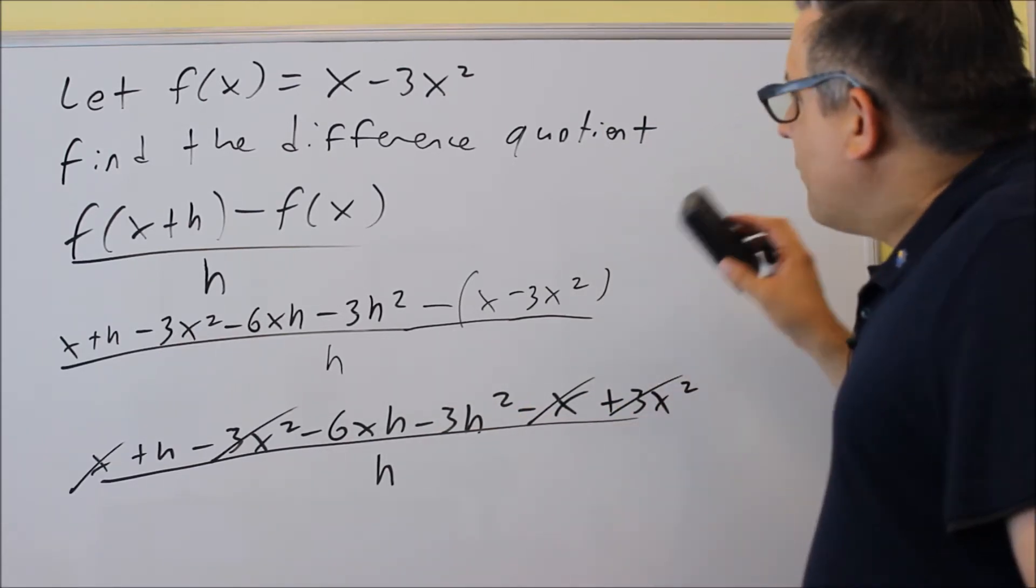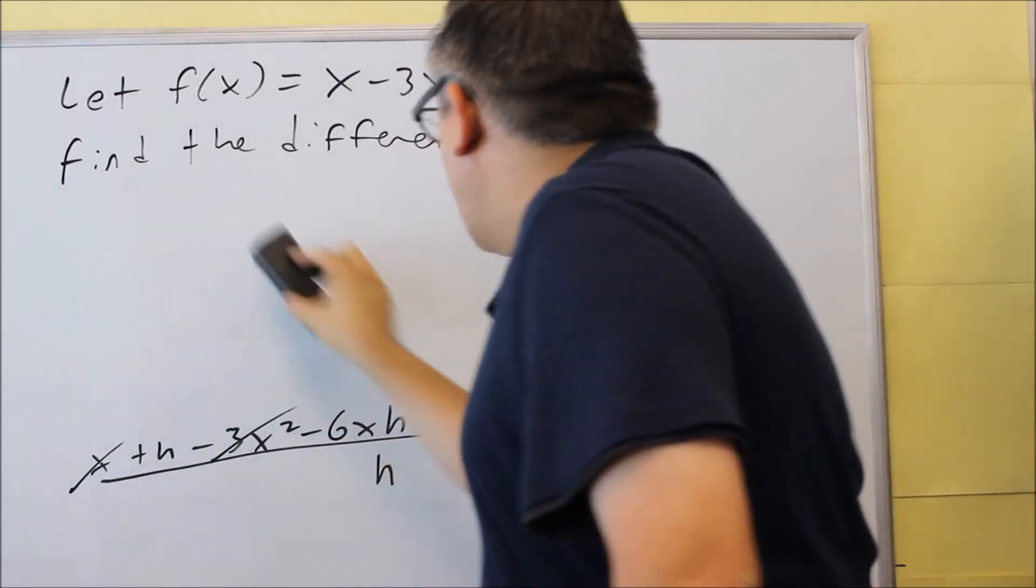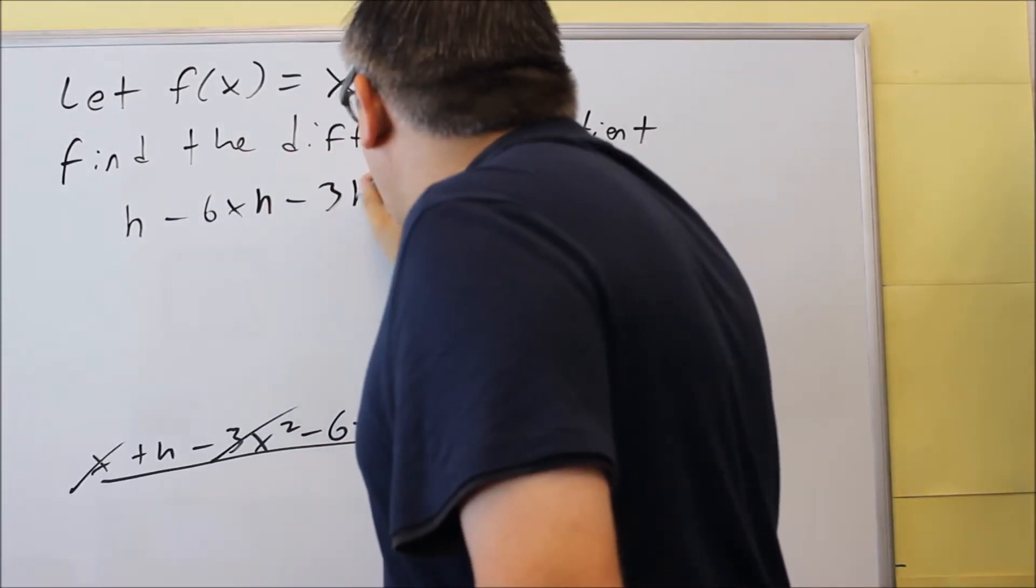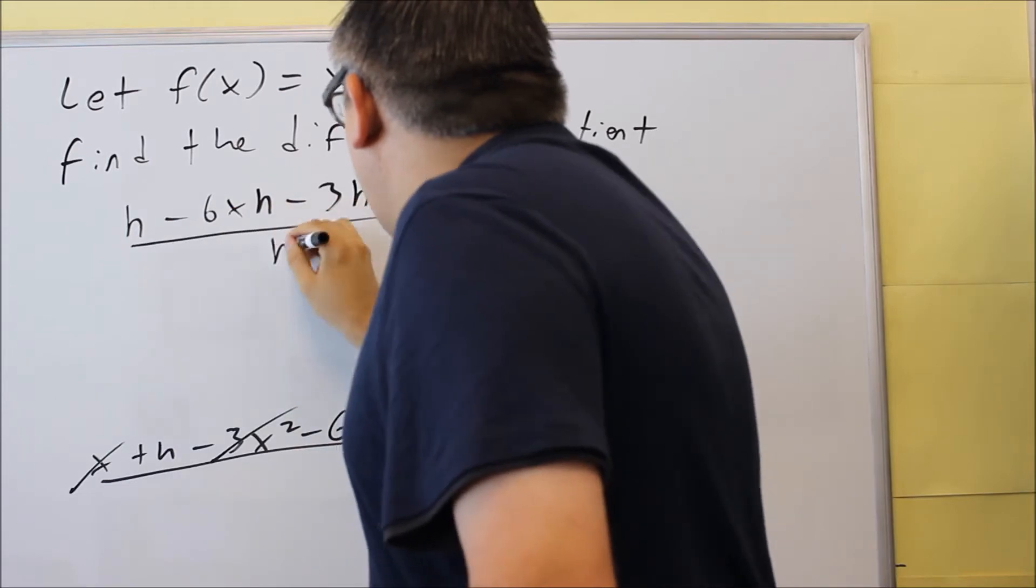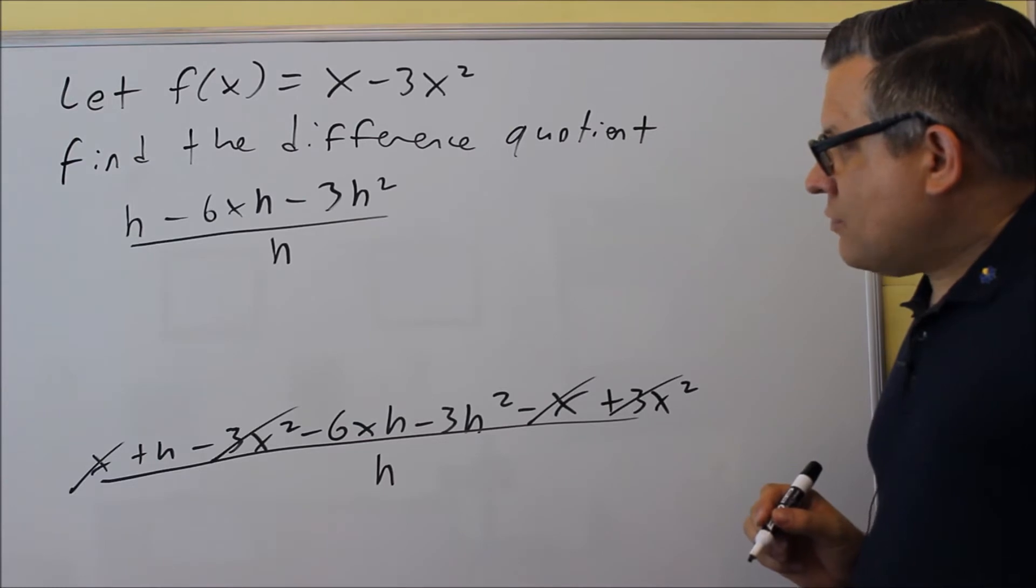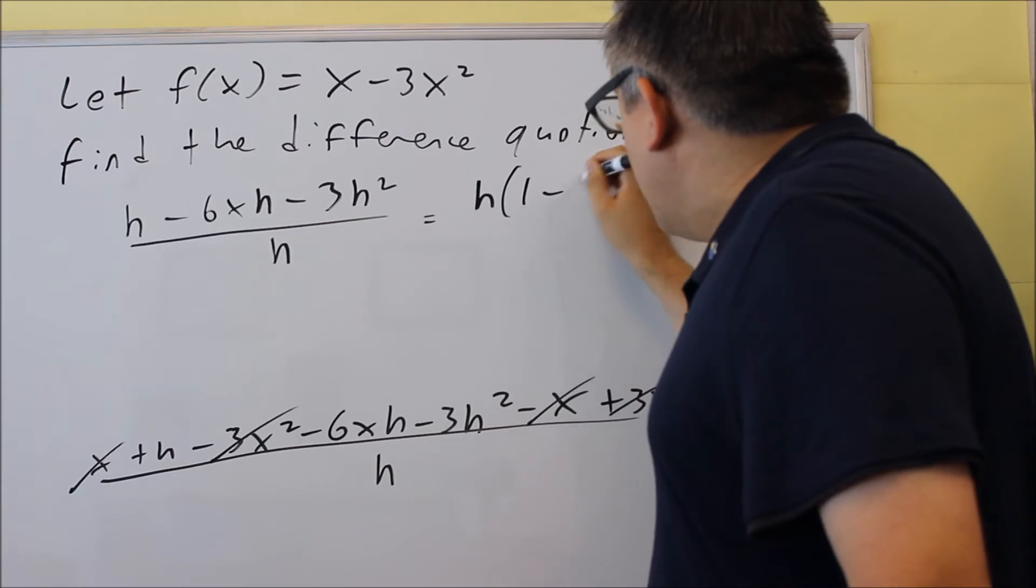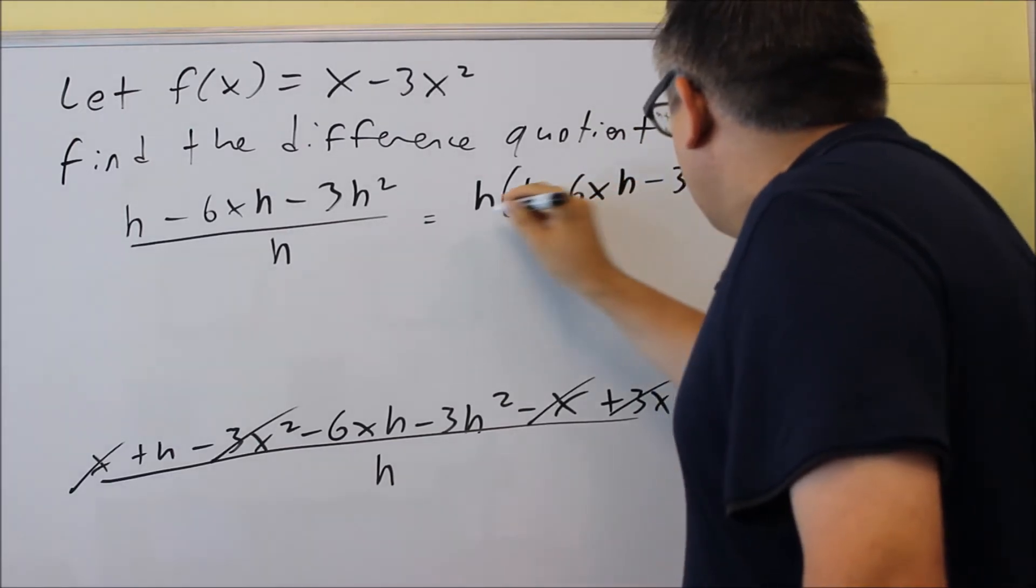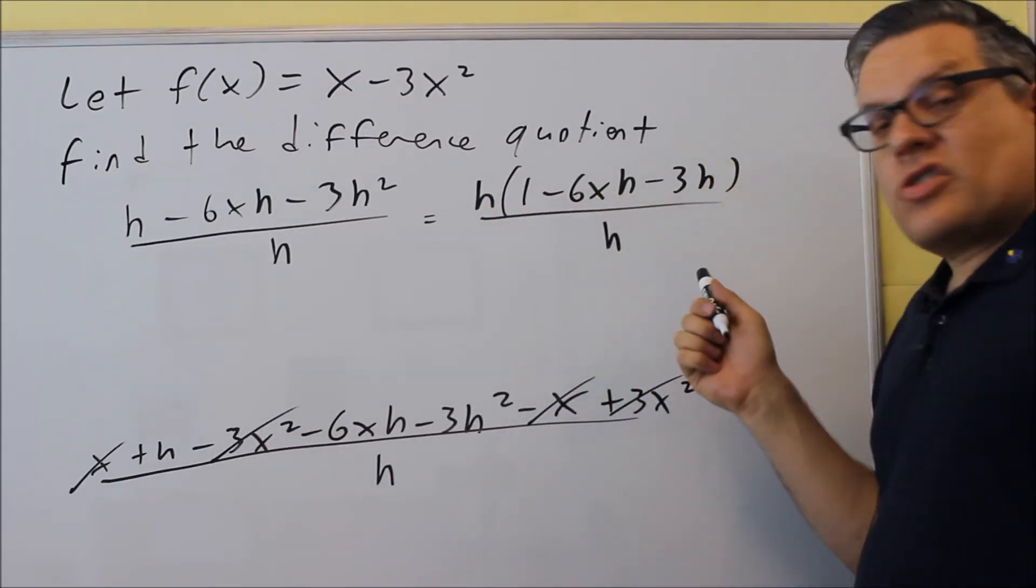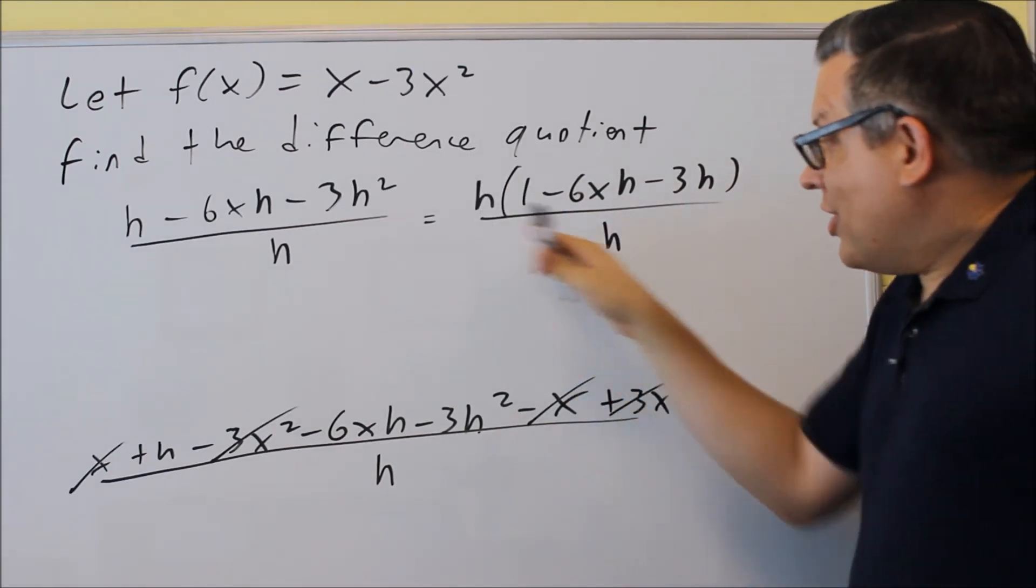So we're left with (h-6xh-3h²)/h. That's what I have left after I cancel everything else out. What we're going to do next is we're going to factor out an h from the top. And we do this because that's going to allow us to cancel the h that we have down below. You should always be able to do this last step. Whenever you do difference quotient, you should always be able to cancel out one of the h's that you have.